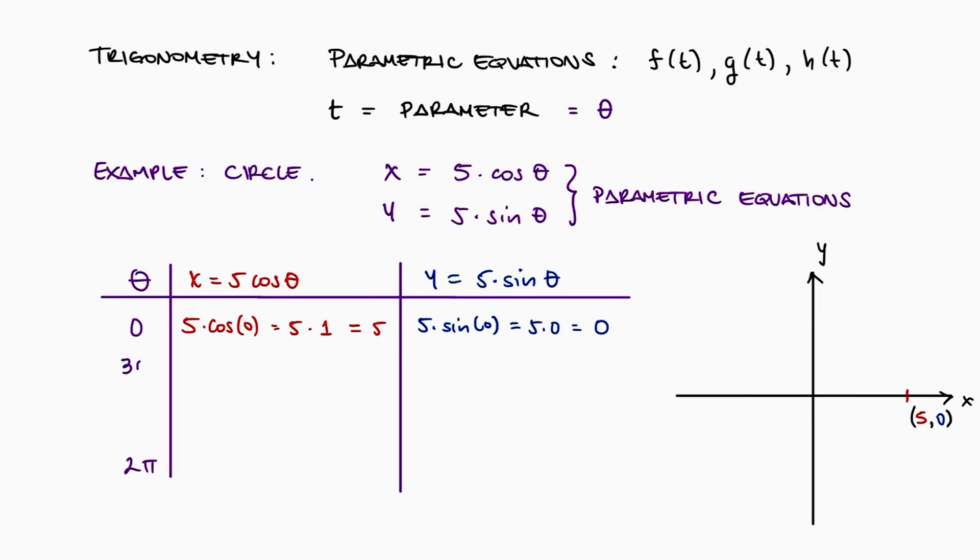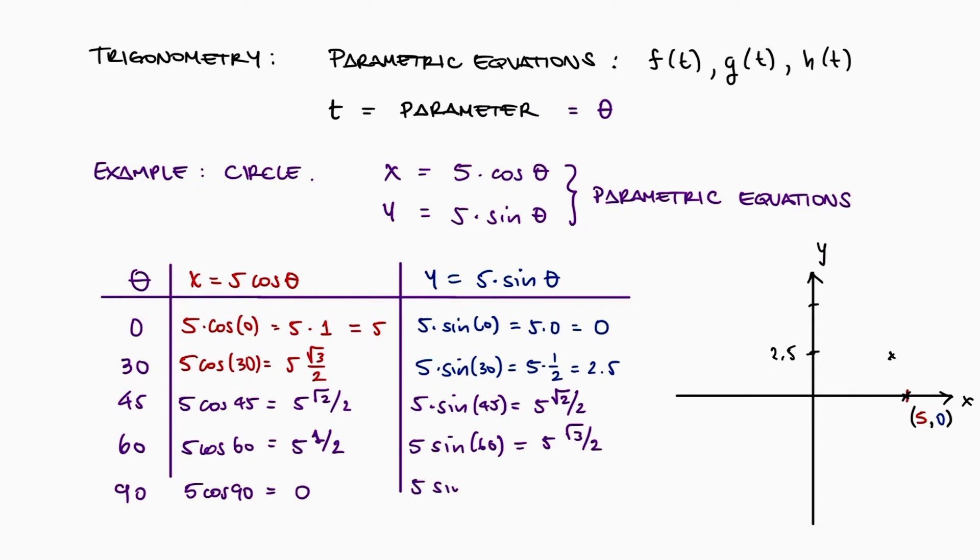If theta is 30 degrees, x would be √3/2 times 5, and y would be 1/2 of 5. If we continue with the other values of theta, like 45, 60, 90, we see that when we plot all xy coordinates, we get one fourth of a plot of a circle of radius 5. And of course, if we evaluate the x and y values for degrees between 90 and 360, we would get the rest of the plot of the circle.